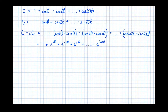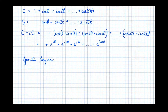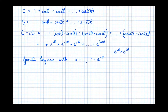Now this is a geometric sequence with common ratio e^(iθ) and first term 1. Using the geometric sequence formula — with a = 1 and r = e^(iθ) — we can justify this: e^(iθ) times e^(iθ), adding the powers, gives e^(2iθ); multiply again to get e^(3iθ). So it's a geometric sequence with common ratio e^(iθ).